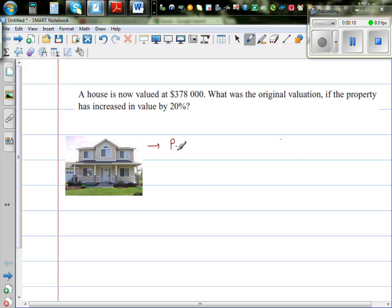The present value of the house is $378,000, and it is said that this $378,000 is arrived after an increase of 20%.